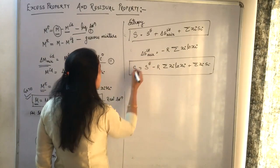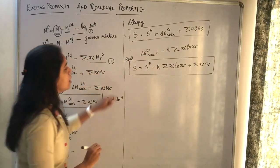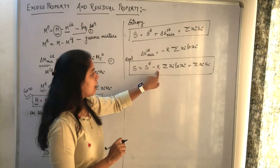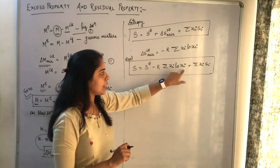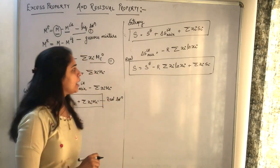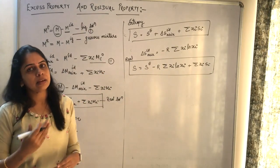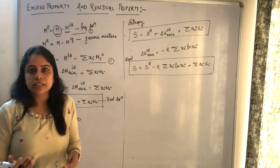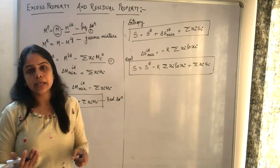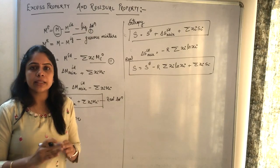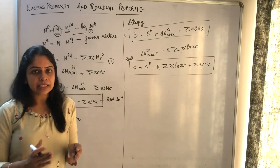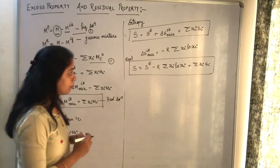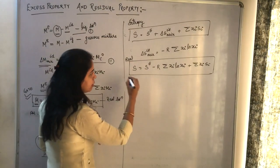This form applies for both ideal and real solutions. Entropy equals the excess entropy minus R summation of xi*ln(xi) plus summation of xi*si. When mole fractions are involved, you can relate this with activity or fugacity — for a gaseous mixture use fugacity, for a liquid solution use activity. Both indicate how a real solution behaves and how much it deviates from ideality.